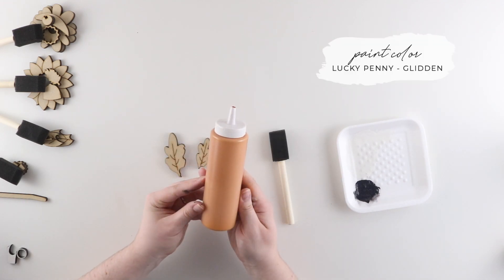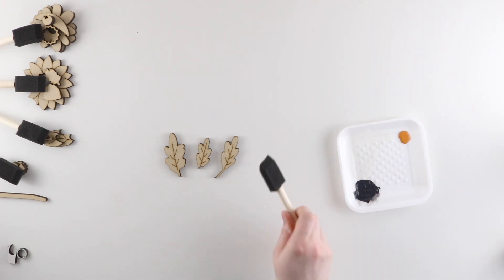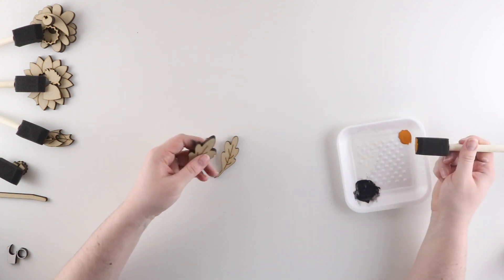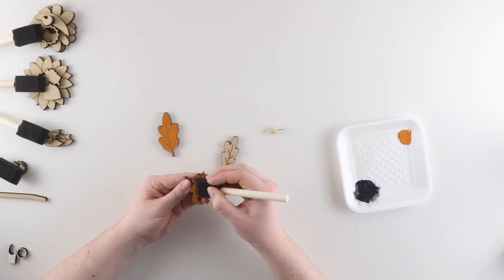Next I'm going to paint the leaves and for this I'm using Lucky Penny by Glidden. On any of the engraved pieces like this you're going to do the same thing that you did on your shiplap insert and use your tack to clean out the lines while the paint is wet.